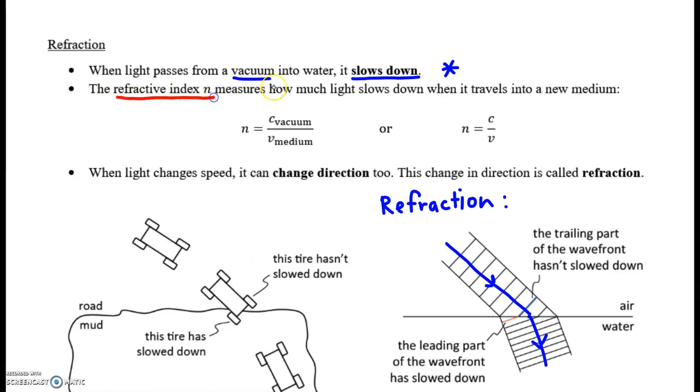We use something called the refractive index, N. So N represents the refractive index. And it measures how much light slows down.